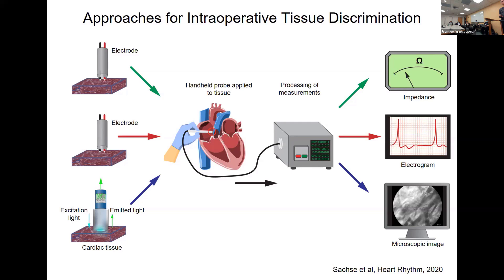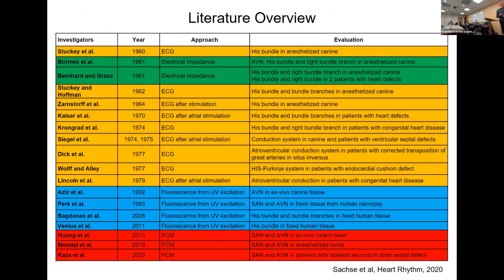By optimizing the electrode position, you can find the closest point to the conduction system. A number of optical approaches have also been developed. They are based on shining light into the tissue — the tissue can be intrinsically fluorescent and you get a signal back, the tissue can scatter the light, or as we've done with FCM, we introduce an artificial fluorophore. This fluorophore is excited and the emitted light is collected. With FCM, this forms a confocal image. With other approaches, it might be just a spectroscopic signal.